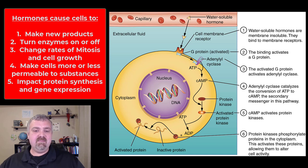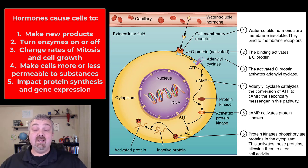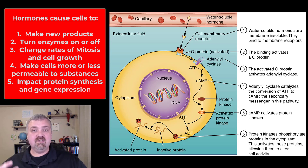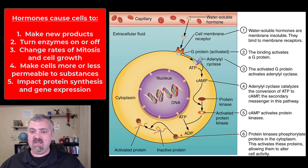Generally, hormones are going to cause change. Maybe they'll have cells synthesize and create a new product, activate enzymes, or maybe turn enzymes off and deactivate them. They can change the growth rate of the cell, maybe change the membrane permeability of the cell, or just impact protein synthesis and have the cells start making more proteins. These are some of the many ways that hormones work, but they're only going to impact cells that have those target receptors — that's the key.